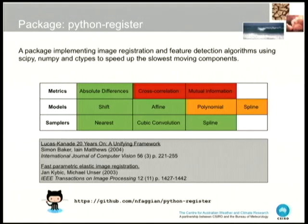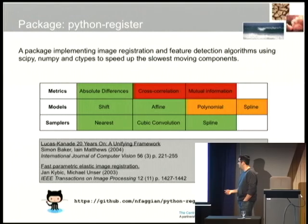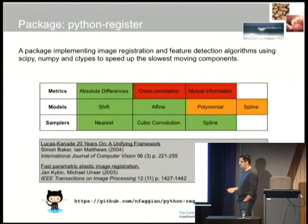The red cells represent things I want but haven't implemented yet — more complex similarity metrics like normalised cross-correlation or mutual information. If you go to the GitHub link you can see the tasks posted for the project. The orange cells are things I've had a crack at: a polynomial deformation model that sort of works, and a spline deformation model for approximating non-rigid motion.